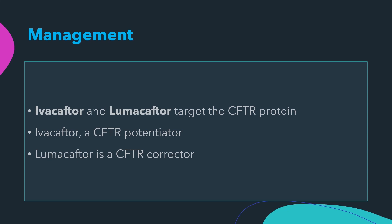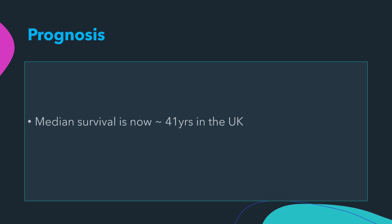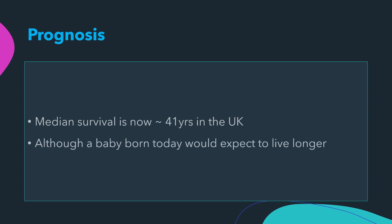Lumacaftor has been shown to correct F508del CFTR misprocessing and increase the amount of cell-surface localized protein. Combined ivacaftor and lumacaftor therapy for patients with F508del has shown improved lung function and reduced pulmonary exacerbations. Median survival is now almost 41 years in the UK, although a baby born today would be expected to live longer.